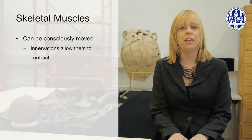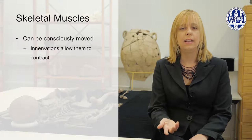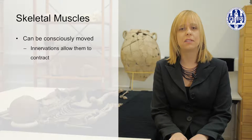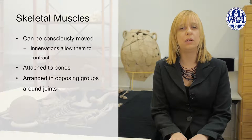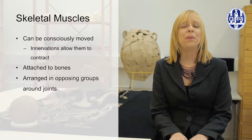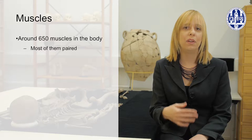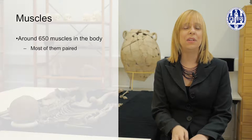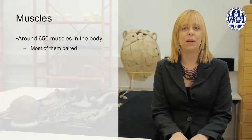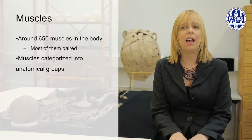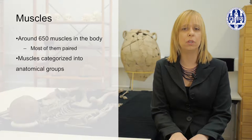Muscles are innervated, meaning they contain nerves, and this gives them the ability to contract to bring about movement. Skeletal muscles are attached to bones and arranged in opposing groups around joints. There are around 650 muscles in the human body, almost all of which are paired — one on the right and one on the left — giving us over 300 pairs of muscles.